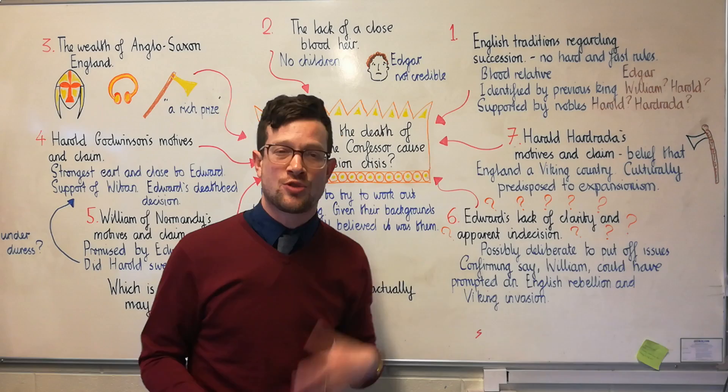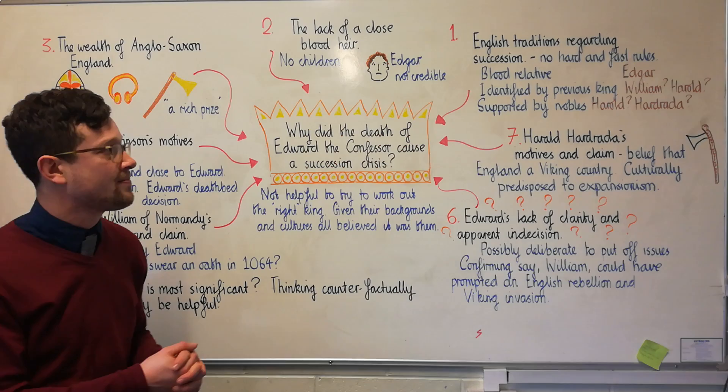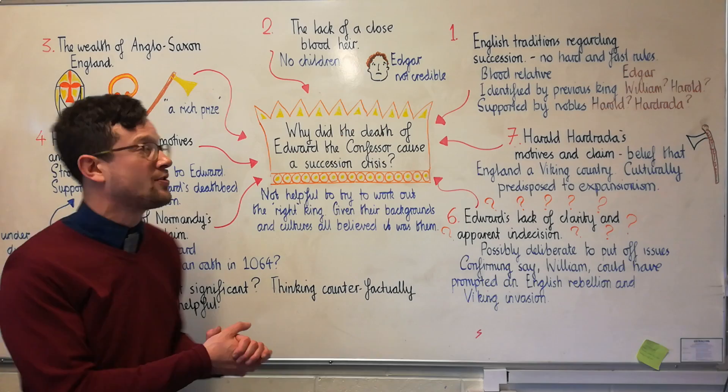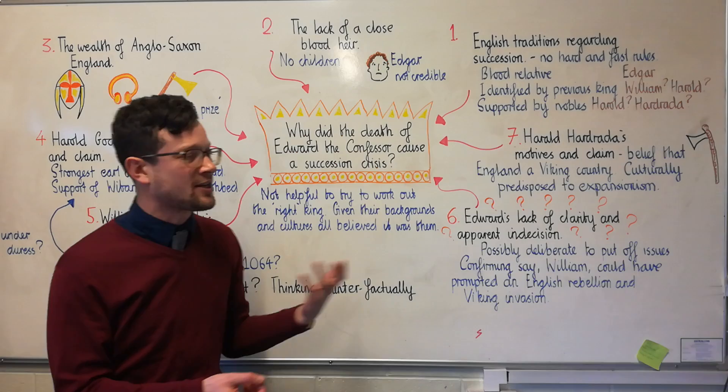We're going to begin with English traditions regarding succession. It's important to acknowledge that these were very different to the strict rules we have governing the succession of English kings and queens today. In the Anglo-Saxon kingdom it's probably more helpful to think of these as guidelines rather than rules. For example, it helps if you were a close blood relative of the king, and it helps if you've been identified by the previous king as the anointed successor — the preferred candidate.